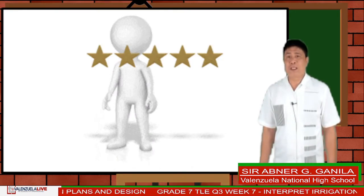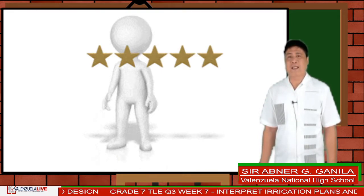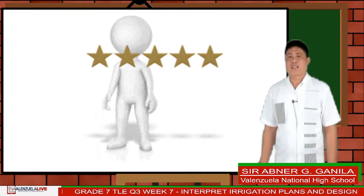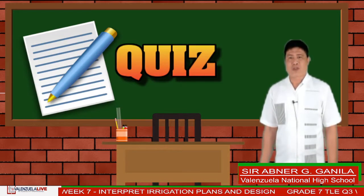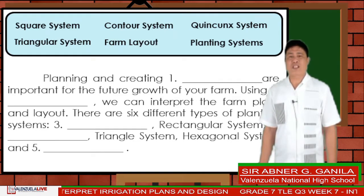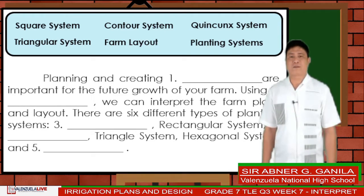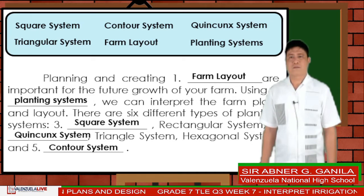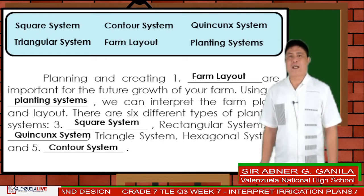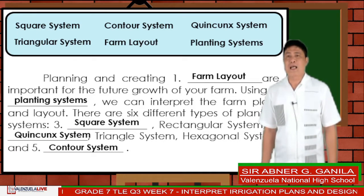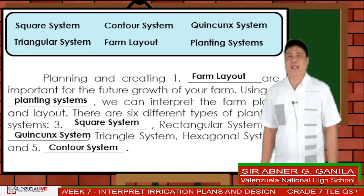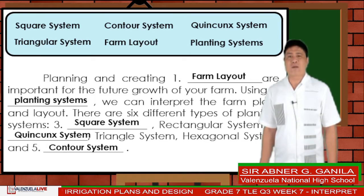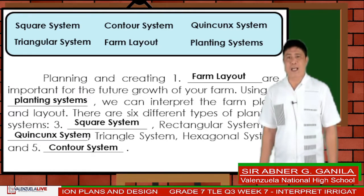To test if you fully understood the lesson, get your notebook and pen and let's have a short quiz. Direction: fill in the blanks with the correct answer to complete the paragraph. Choose your answer from the box. Planning and creating farm layout are important for the future growth of your farm. Using planting systems, we can interpret the farm plans and layout. There are six different types: square system, rectangular system, queen count system, triangular system, hexagonal system, and contour system.